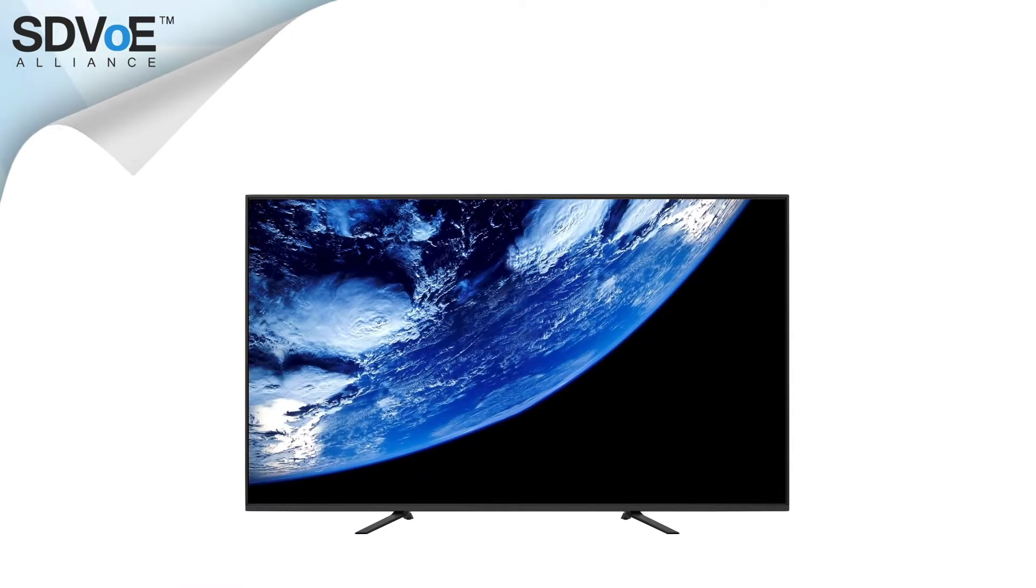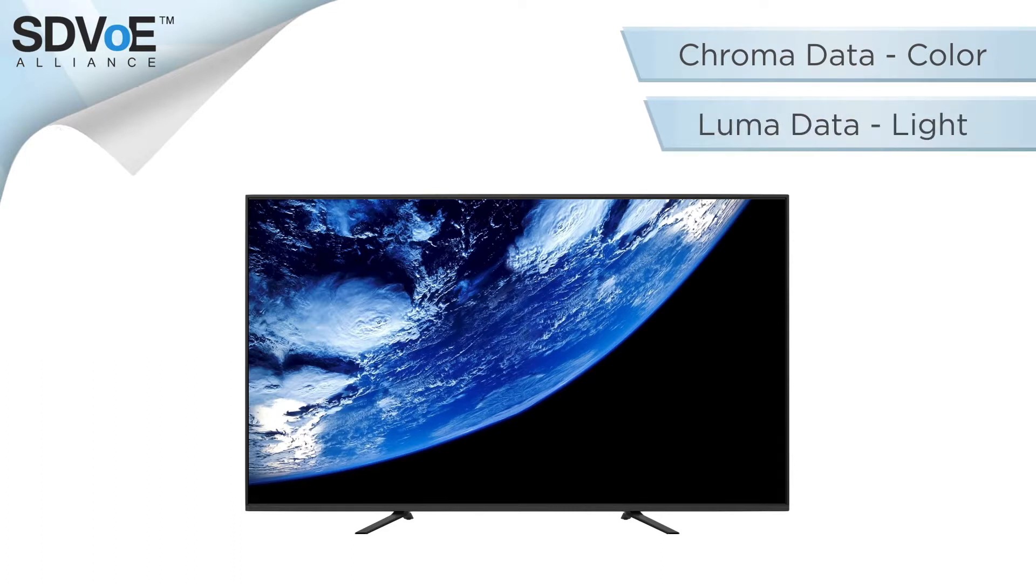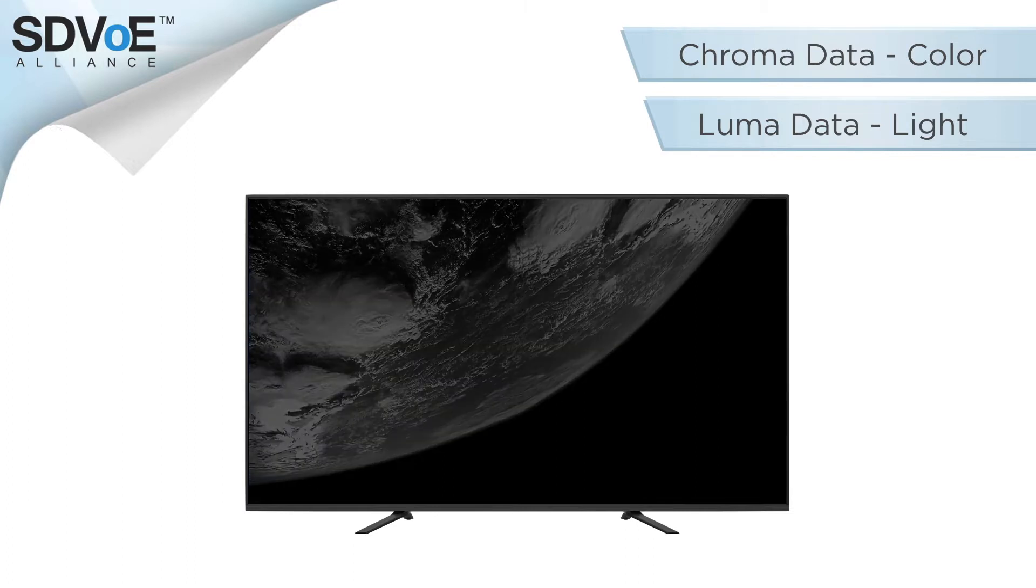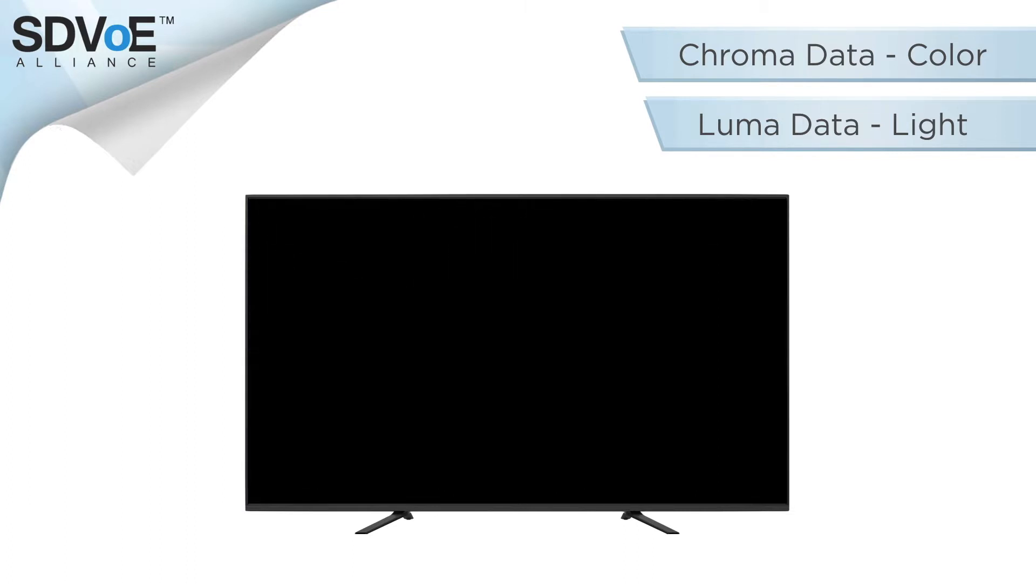Every pixel on a display has two sets of data: chroma data, meaning color, and luma data, meaning light. If we take all the chroma data away, we'd be left with a black and white image. And if we took all the luma data away, we'd be left with nothing. So it's safe to say that each pixel must maintain its own luma data.